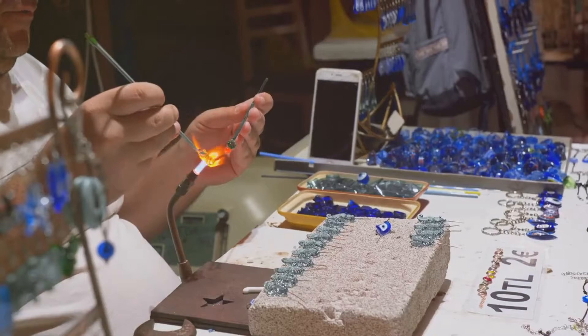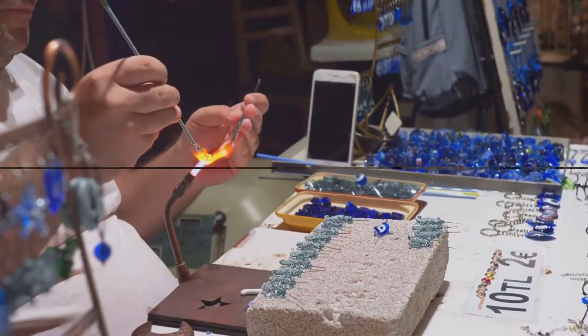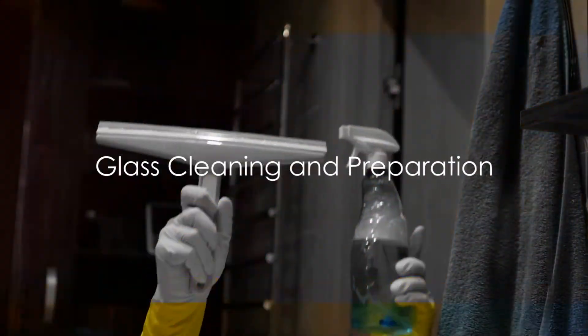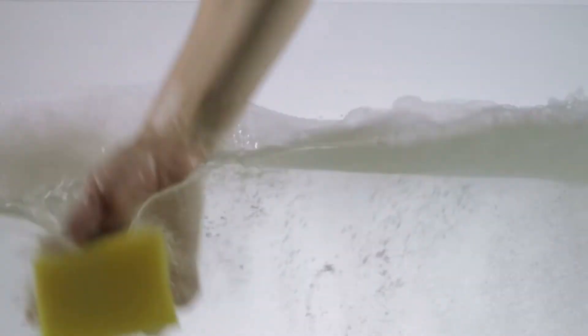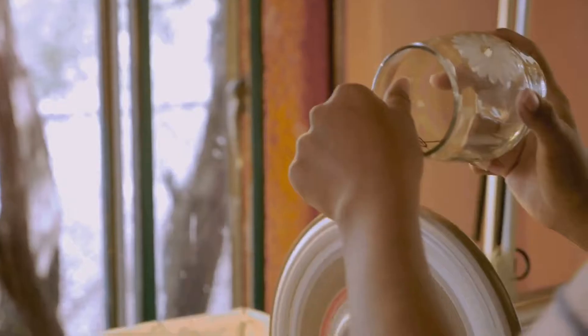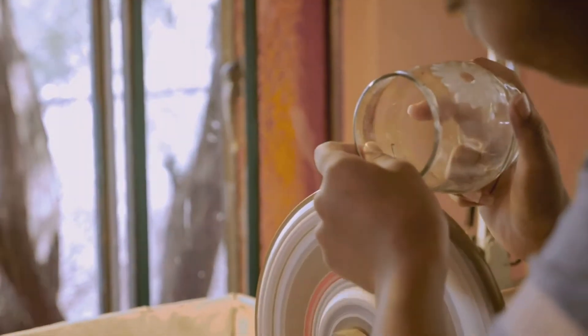Now that we have our glass, it's time to prepare it for the reflective coating. Before we can turn our glass into a mirror, it needs a good cleaning. Our glass sheets are transported to a washing station. Here, they are meticulously cleaned using a combination of water and cerium oxide powder. This isn't your average household cleaning.